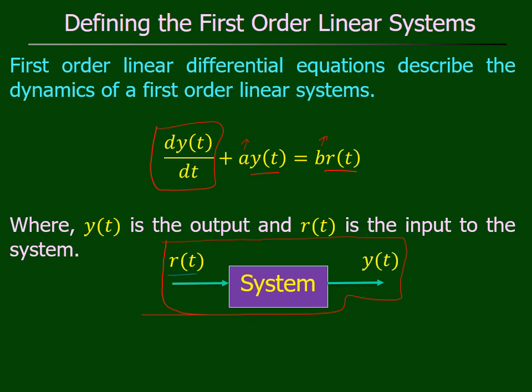The system can be any electrical system, mechanical system, or an economic system. We excite the system by a signal r(t) and it gives us y(t). If this response y(t) behaves like the y(t) in equation number one, we say that the system is a first-order linear dynamic system.